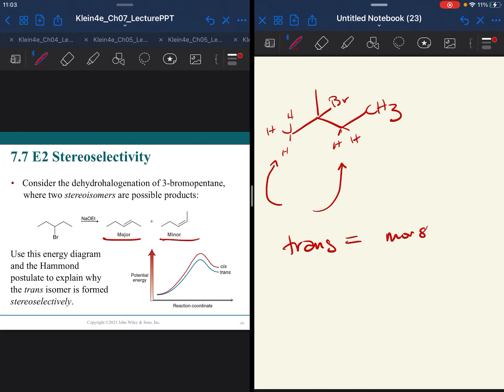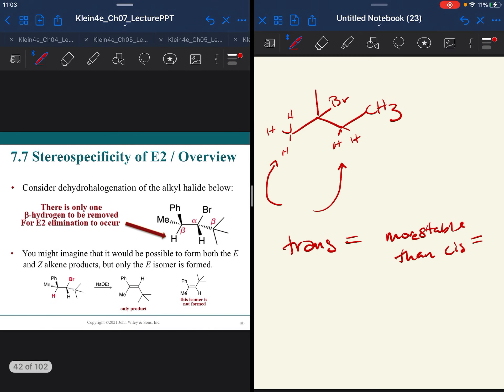Trans double bond, more stable than a cis double bond. But you would likely make both. They're somewhat close in energy, depending on how big the R groups are.